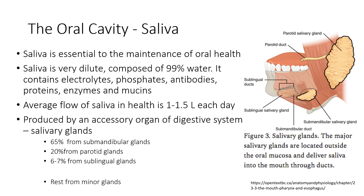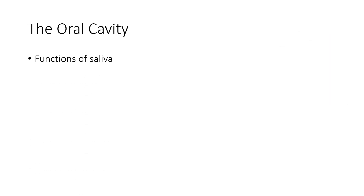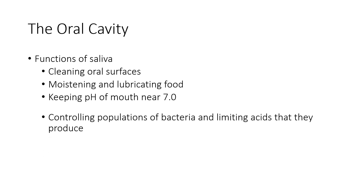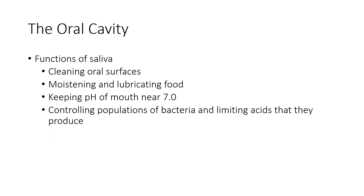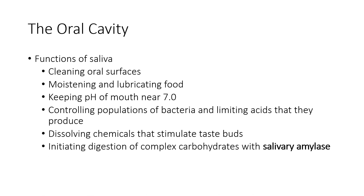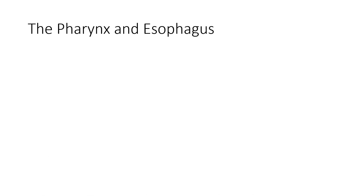Further saliva comes from the sublingual glands and the rest from the minor glands. Saliva has many functions, including cleaning the oral surfaces, moistening and lubricating food, keeping the pH of the mouth near 7.0, controlling populations of bacteria and limiting the acids they produce, dissolving chemicals that stimulate taste buds, and initiating digestion of complex carbohydrates via salivary amylase.